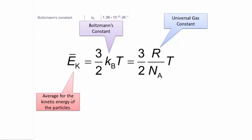R is the universal gas constant, which is 8.31 joules per Kelvin per mole. And NA is Avogadro's constant, which is 6.02 times 10 to the 23 per mole. It tells you how many particles are in a mole.